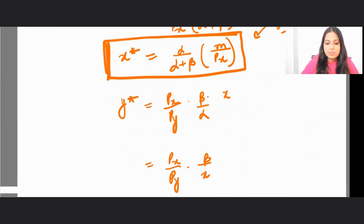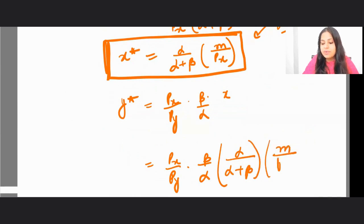And instead of x, you can put alpha upon alpha plus beta, m by px.